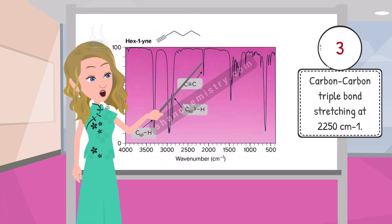In the IR spectrum of alkyne, as in hexine, we can observe a peak at 2250 per cm due to the carbon-carbon triple bond.